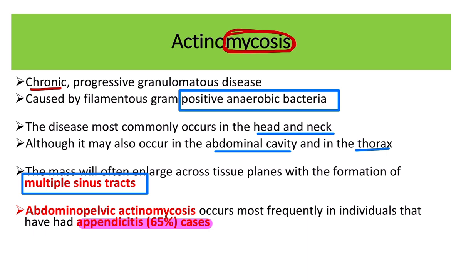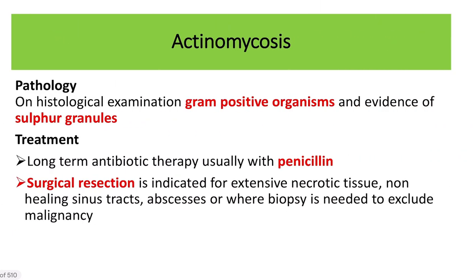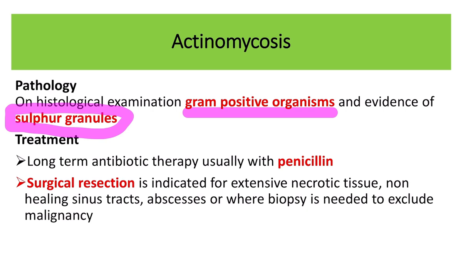Abdominal actinomycosis is relatively rare, but when it does occur, it most commonly involves the appendix. On histological examination, the gram-positive organism shows evidence of sulfur granules. This is a very important diagnostic feature — actinomycosis releases sulfur granules, and this is the diagnostic hallmark of actinomycosis.